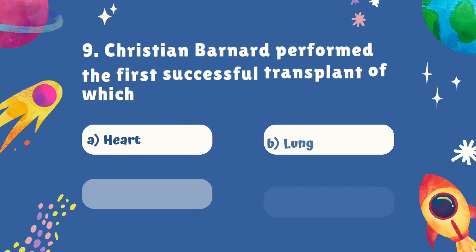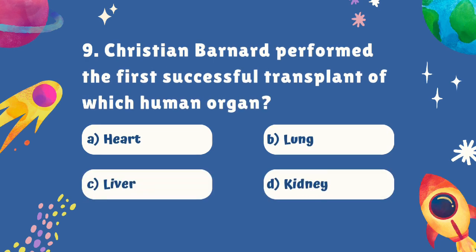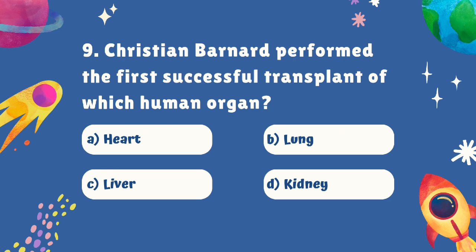Question number nine. Christiaan Barnard performed the first successful transplant of which human organ? Is it A. Heart, B. Lung, C. Liver, or D. Kidney? The correct answer is A. Heart.